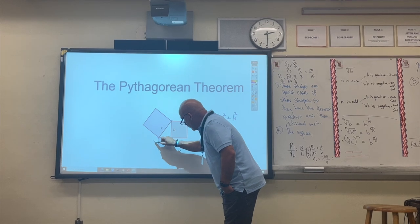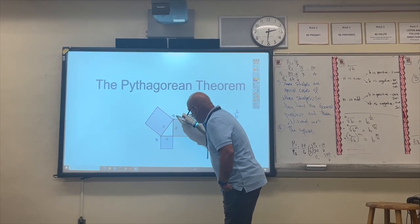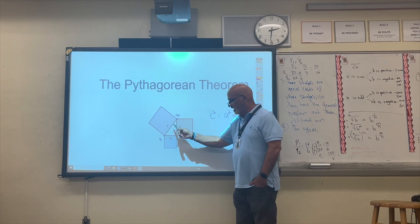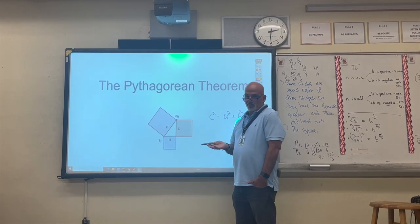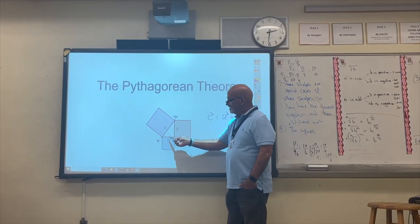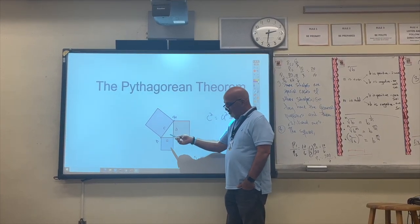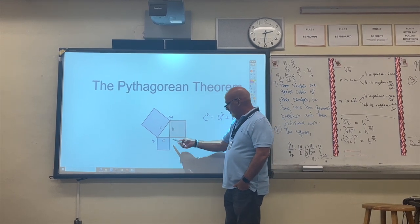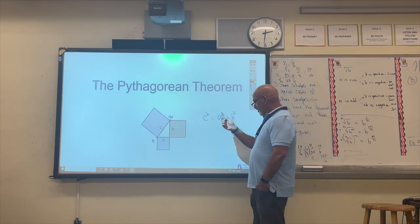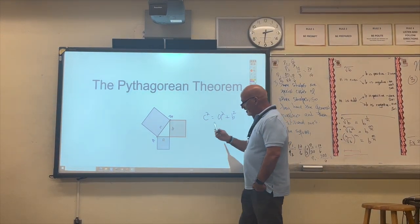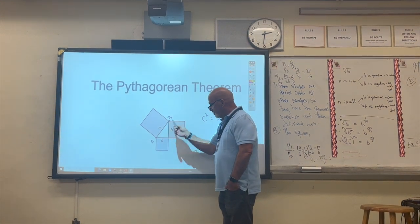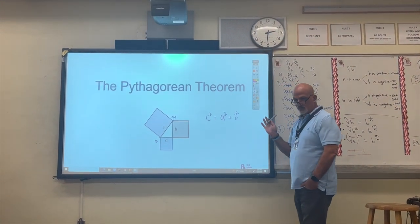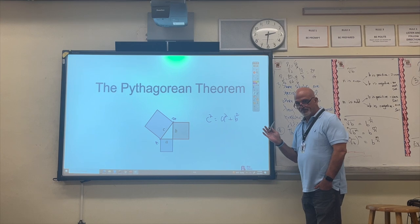If you had point A and point B and I asked you to find the distance between them, you find this horizontal distance and square it, find this vertical distance and square it, and when you add them you get the distance from A to B squared — you just have to apply the square root on both sides.